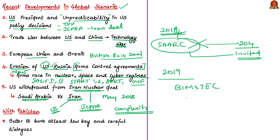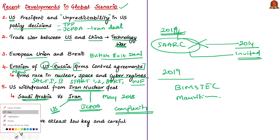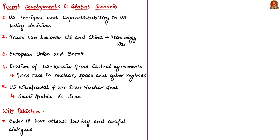In addition to BIMSTEC, India also invited Kyrgyzstan, which is the present chair of the Shanghai Cooperation Organization. The invitation was also extended to Mauritius. India-Pakistan relations, already strained, became very severely strained since September 2016 when the Uri terror attack happened.